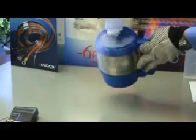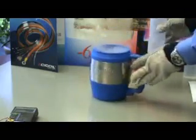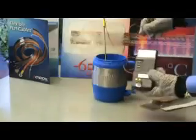We're pouring some IPA in there, some alcohol, and you can see the resulting steaming. What we have here is a solution of dry ice and alcohol to create a solution in which to dip a flexible flat cable.